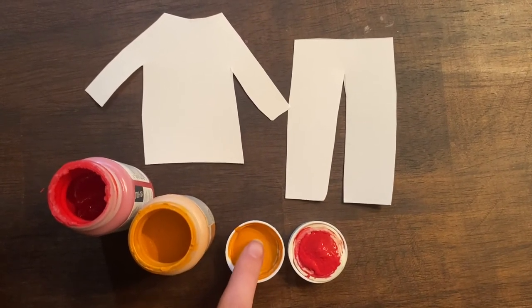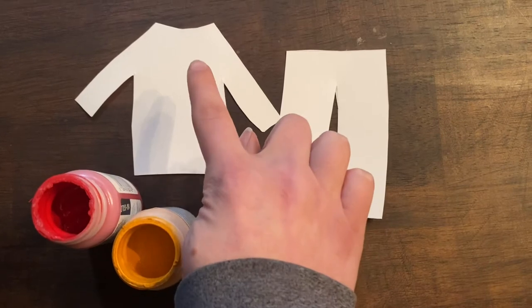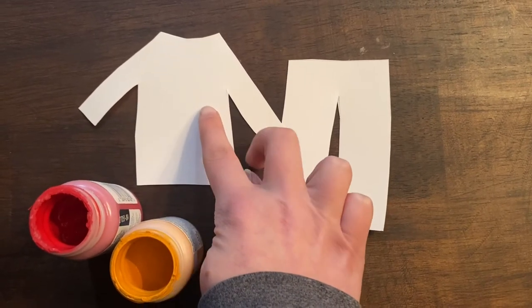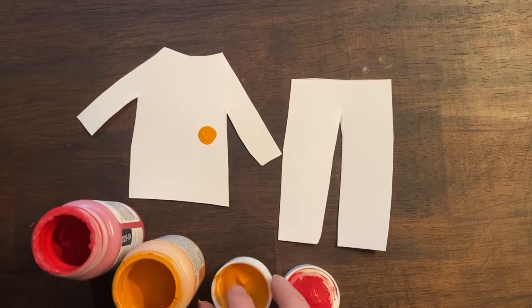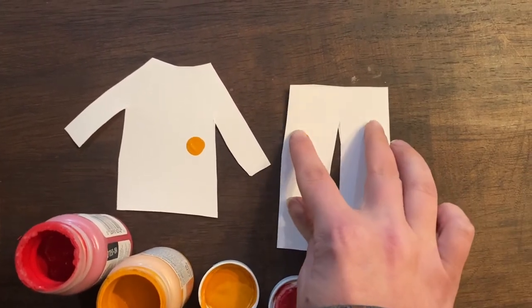So what I'm going to do is I'm just going to dip into my paint, and then go ahead and stamp some polka dots onto the shirt. And I'm going to do the same for the pants as well.